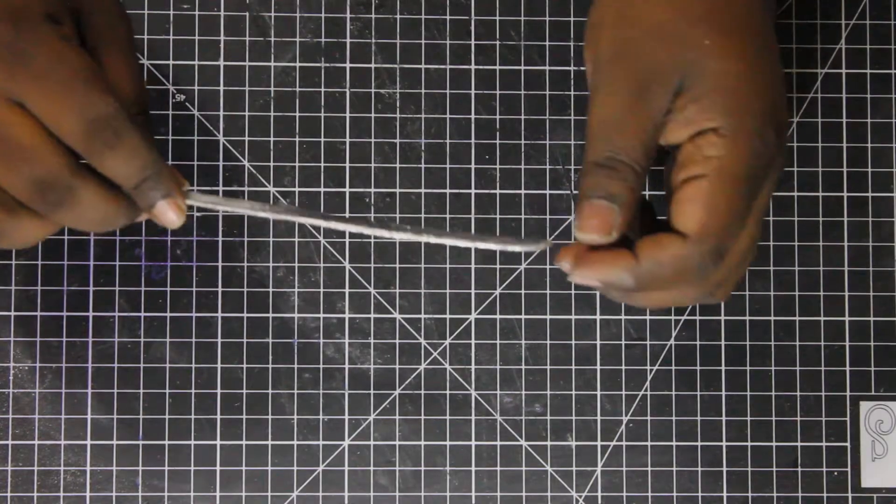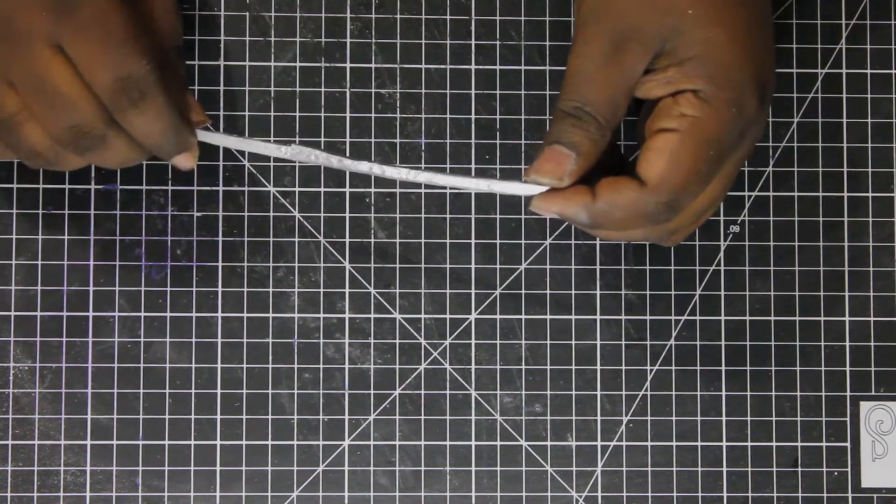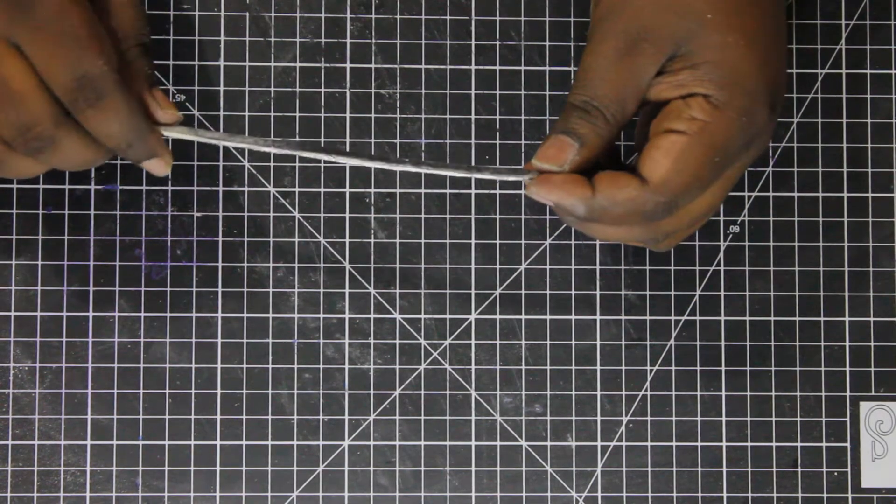After that I painted the blade with silver spray paint to give it a metallic shine.